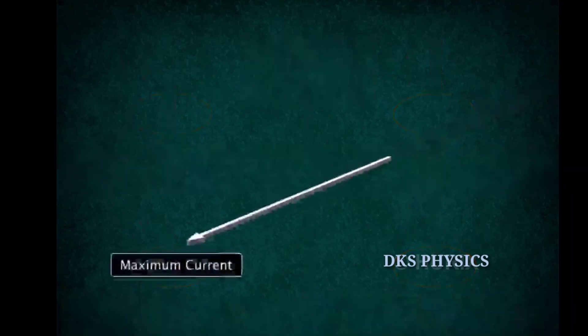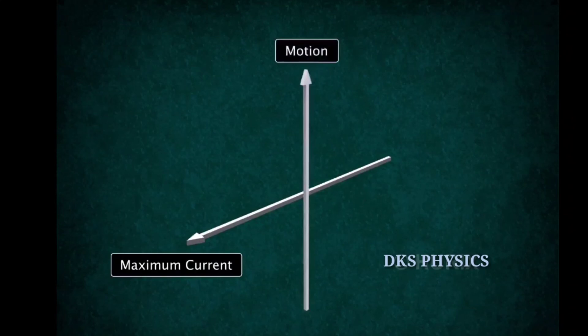The induced current is high when the direction of motion of the coil is at right angles to the magnetic field.